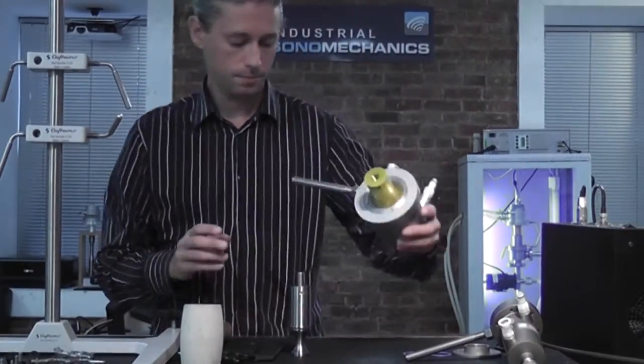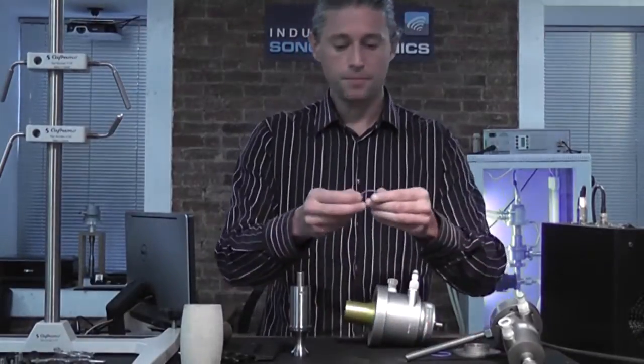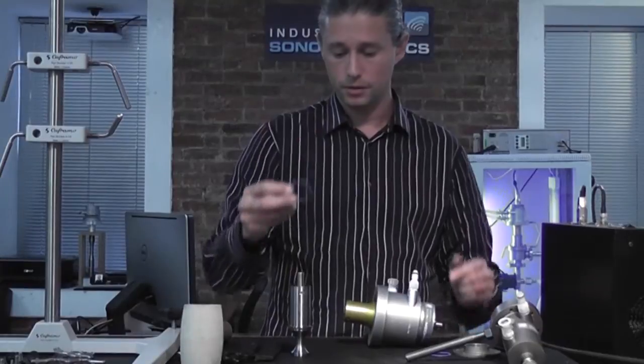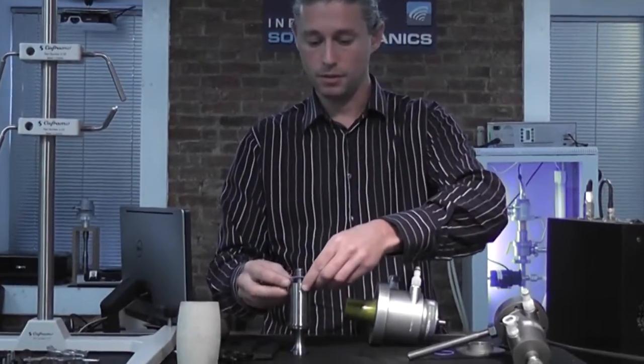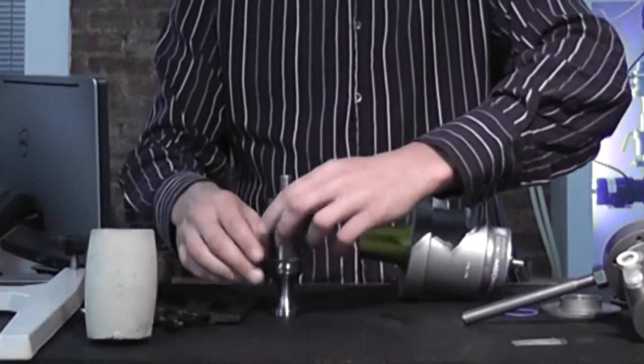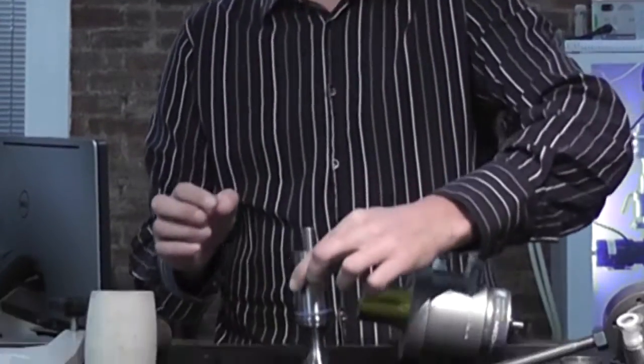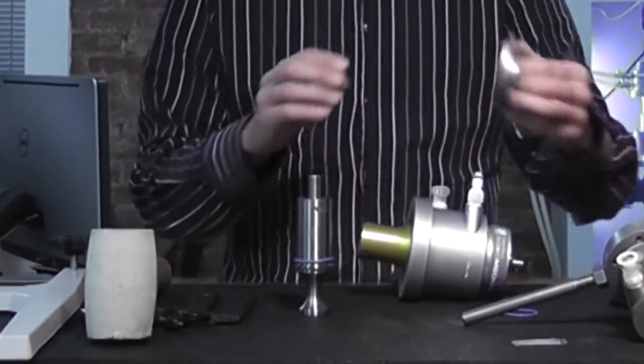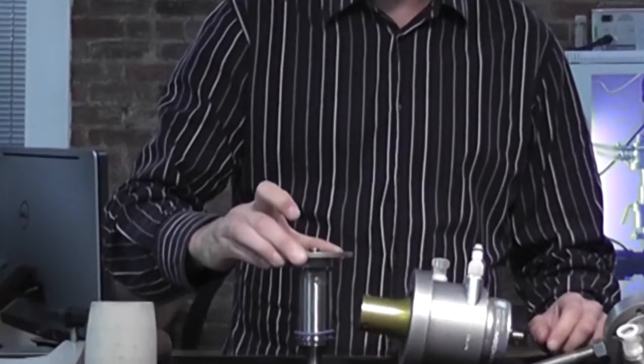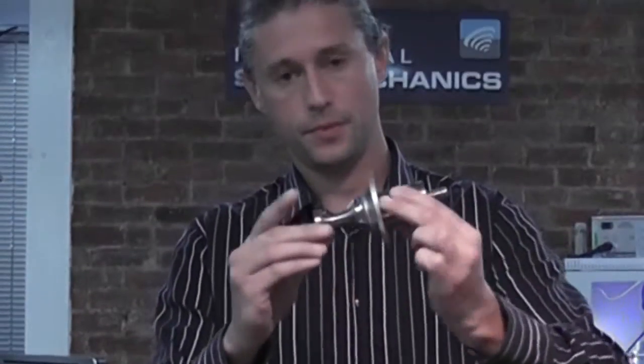Next step is to place the first O-ring from the back end of the horn above its flange, like so. Next, take the lid of the reactor chamber and place it over the O-ring, above the flange.